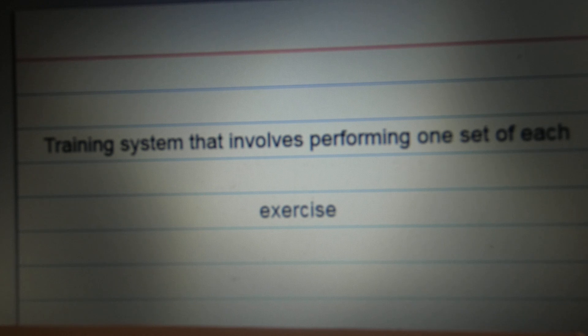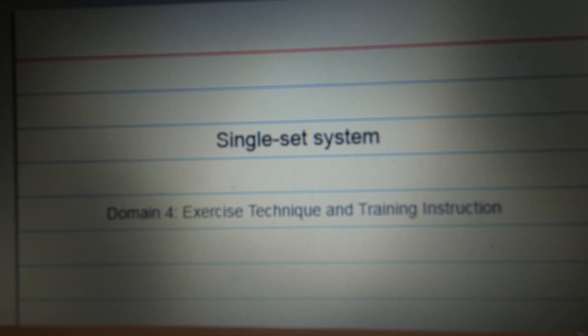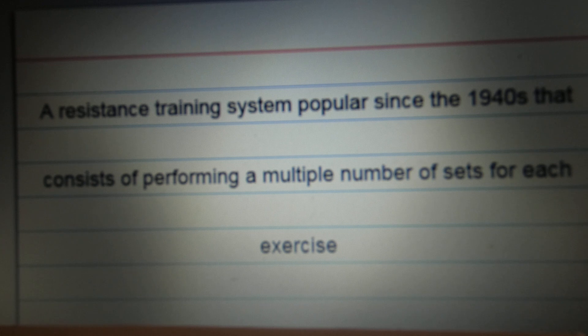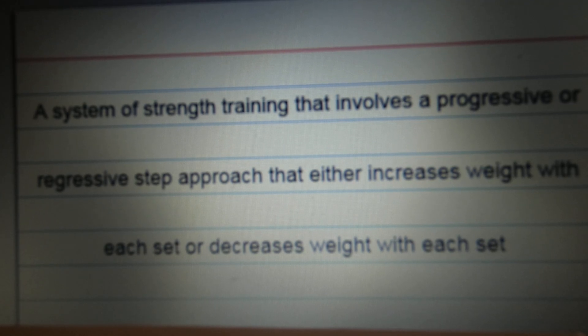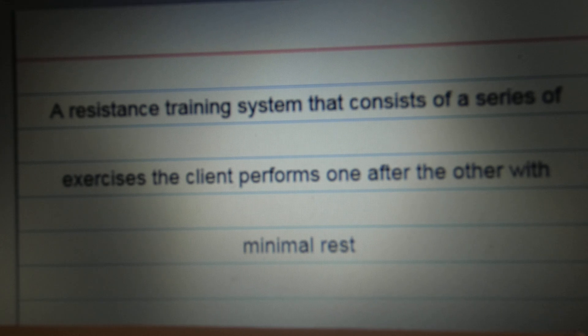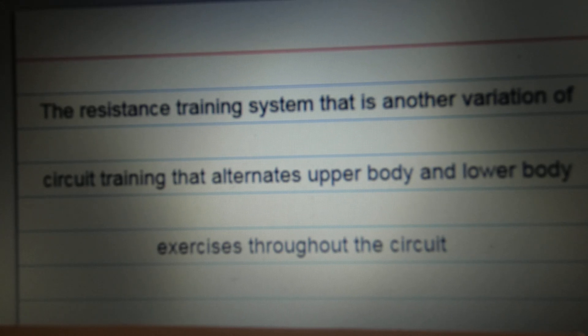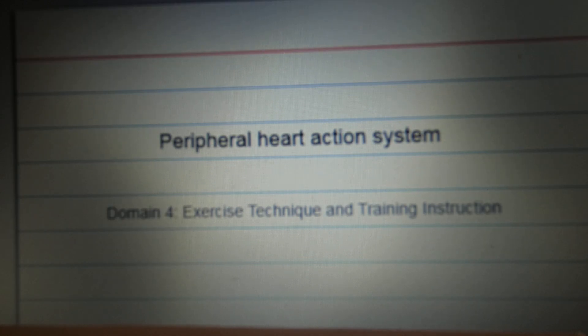Training system that improves performance one set of each exercise. Single set system. A resistance training system popular since the 1940s that consists of performing a multiple number of sets for each exercise. Multi set system. A system of strength training that involves a progressive or regressive step approach that either increases weight with each set or decreases weight with each set. Pyramid system. A system of strength training that uses a couple of exercises performed in rapid succession of one another. Superset system. A resistance training system that consists of a series of exercises the client performs one after the other with minimal rest. Circuit training system. The resistance training system that is another variation of circuit training that alternates upper body to lower body exercise throughout the circuit. Peripheral heart action system.